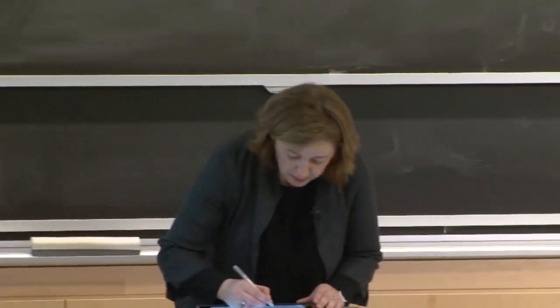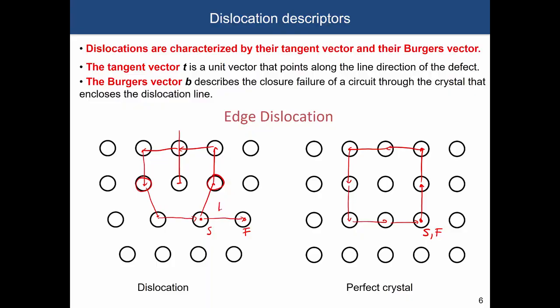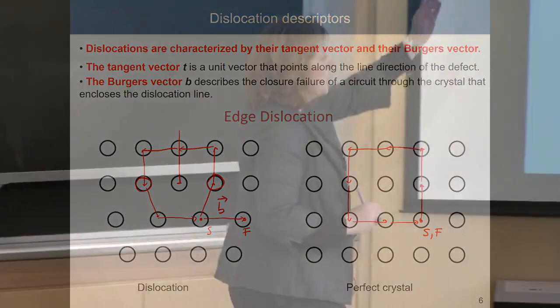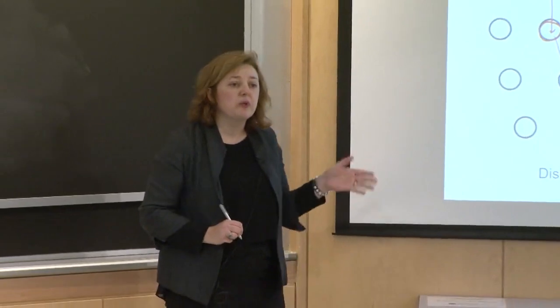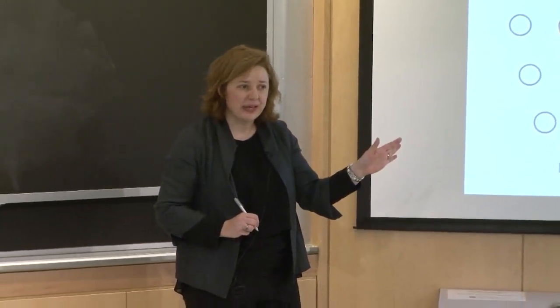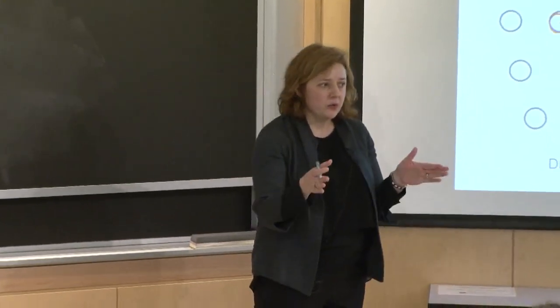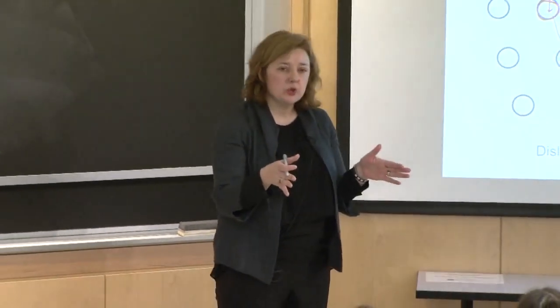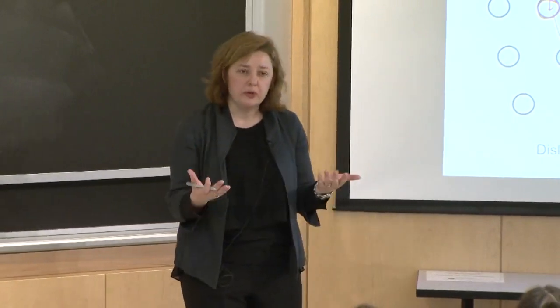This will be the Burgers vector for this particular dislocation. If there were two additional planes, the Burgers vector would be twice as long. The length of this vector gives you the magnitude of the deformation.